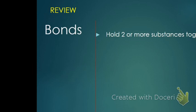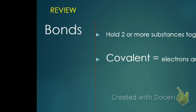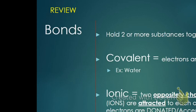So we talked about bonding, and we reviewed that in our Kahoot — bonds are what hold two or more substances together. We talked about covalent bonds, which is when electrons are shared. And we talked about ionic bonds, which is when an atom gives another atom an electron and they become oppositely charged, and then they're attracted to each other.